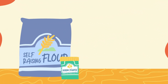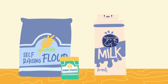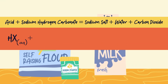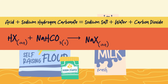There is another way the baking powder part of self-raising flour can be used. This uses the chemical reaction that takes place between metal carbonates and acids: acid plus sodium hydrogen carbonate equals sodium salt plus water plus carbon dioxide.